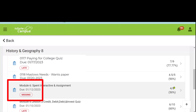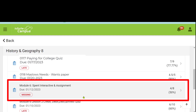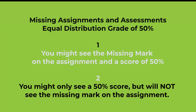Notice on this assignment that you see a marking of missing. That means this was not completed by the student. Any missing assignments and assessments will receive an equal distribution grade of 50%. Not all missing assignments will have this missing mark on them, because grades are brought in from outside programs, Canvas, or hand input by teachers — they don't all receive that automatic missing mark. So the best way is to look at your scores: if you see a score of 50%, most likely it means the student has not completed that assessment or turned in that work.